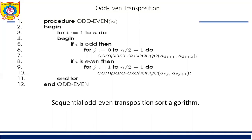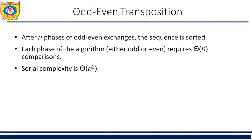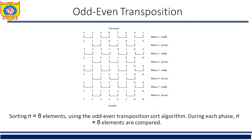The odd-even transposition sort is shown in this algorithm and in this figure, where N equals 8 elements are sorted using the odd-even transposition sorting algorithm. During each phase, N equals 8 elements are compared. You can see the parallel formulation of this odd-even bubble sort — it is easy to parallelize odd-even transposition. During each phase of the algorithm, compare-exchange operations on pairs of elements are performed simultaneously.